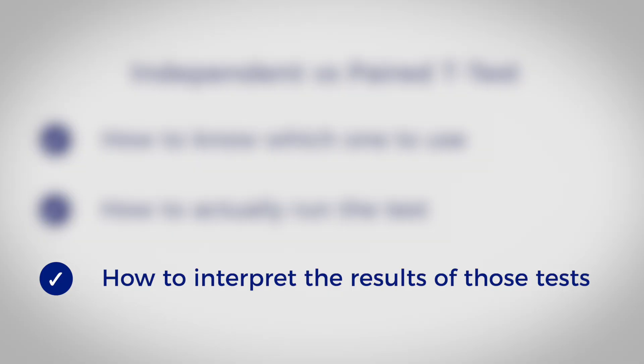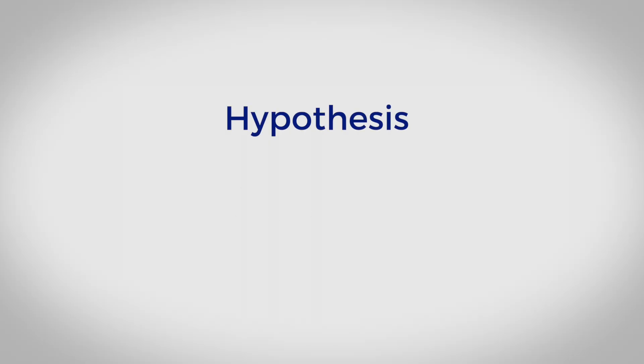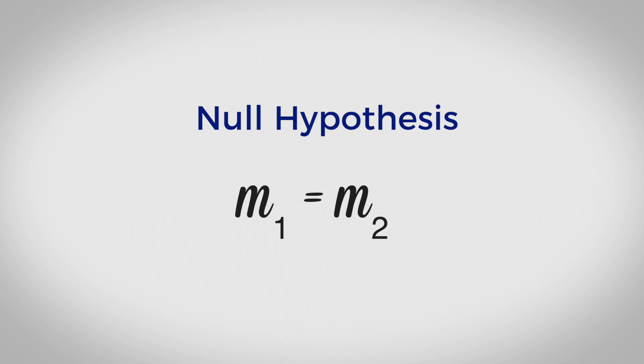Finally, how to interpret the results — and this is really important because the difference between these two tests comes down to what hypothesis is actually being tested. With an independent t-test, you're testing the hypothesis that the mean of one group is not equal to the mean of another group. The null hypothesis is that the means are equal, and you get a p-value that tells you whether to accept or reject the null — i.e., whether the means are different or the same.